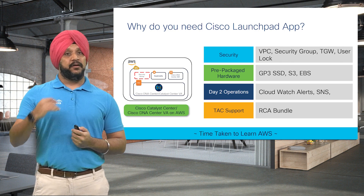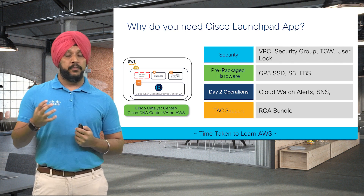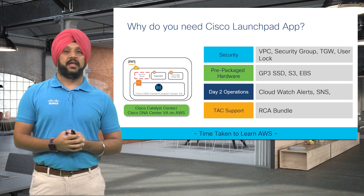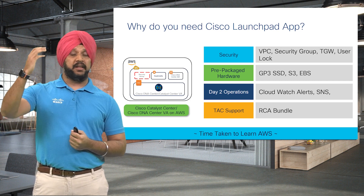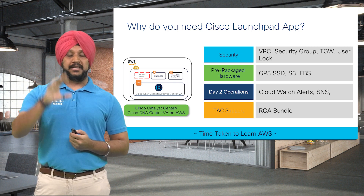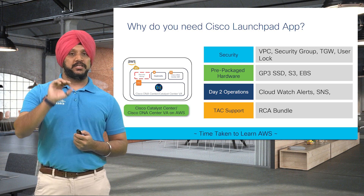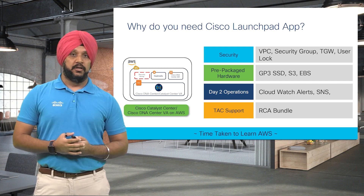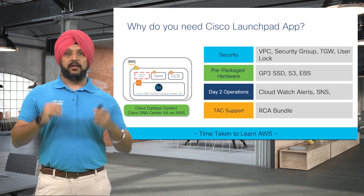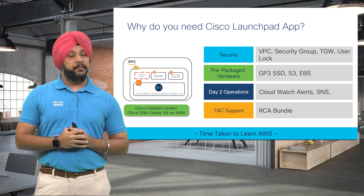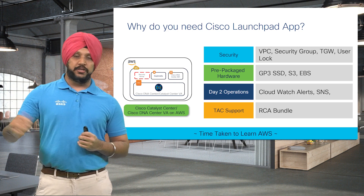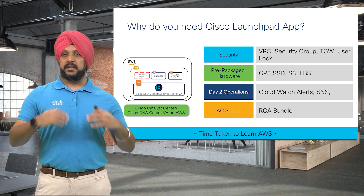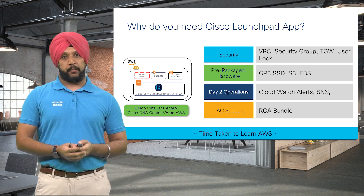With the Launchpad app, we are also able to make it very easy for Cisco TAC to troubleshoot any issues. We make it very easy to create an RCA bundle that TAC can look at — not just troubleshooting the Catalyst Center, but also your AWS infrastructure. This saves a lot of time for our network admins. They don't need AWS Solutions Architect certifications. They don't need to learn AWS. They can do everything with the simple Launchpad application.